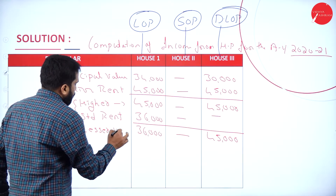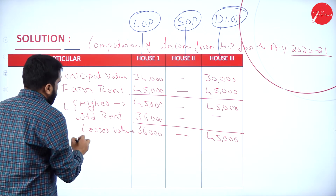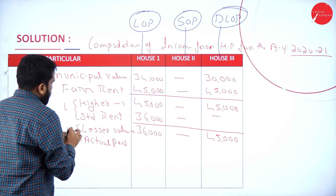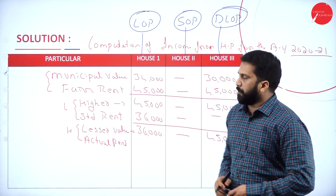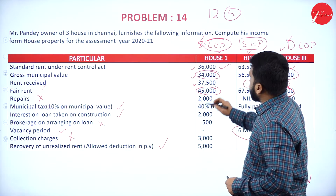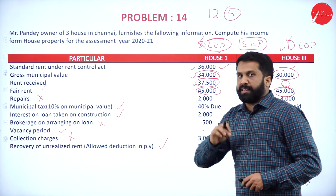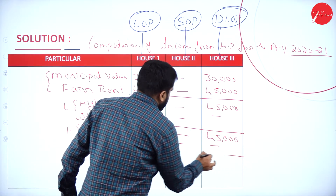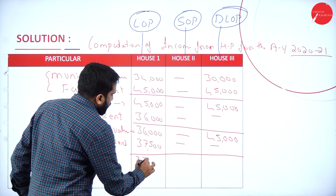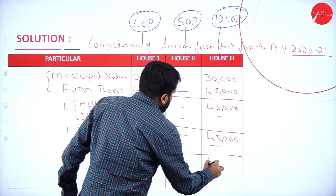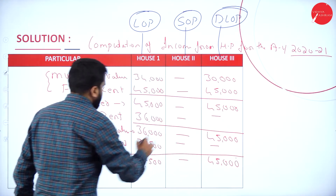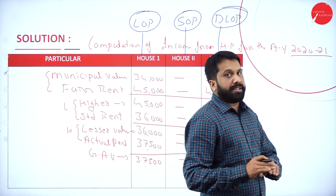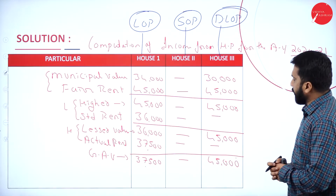Comparing with actual rent, whichever is higher is taken. Actual rent for House 1 is 37,500 and nil for House 3. So the gross annual value is: House 1 = 37,500 (higher of 36,000 and 37,500), House 2 = nil (self-occupied), House 3 = 45,000.